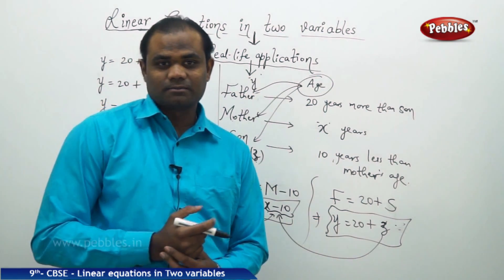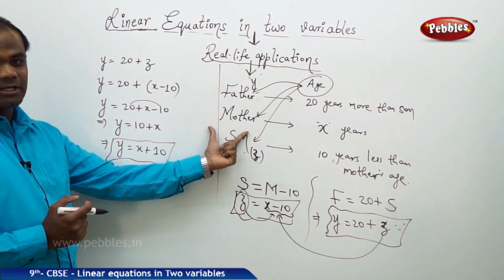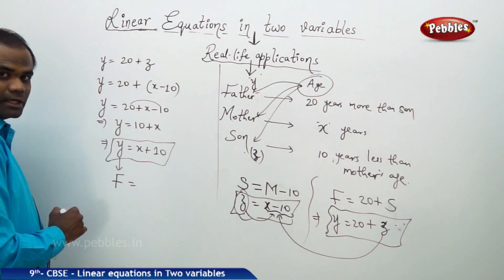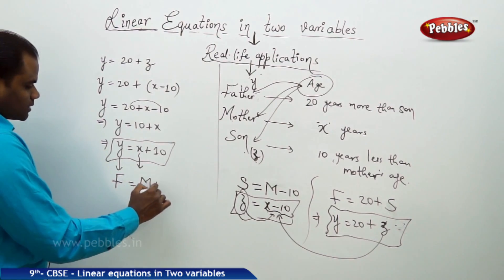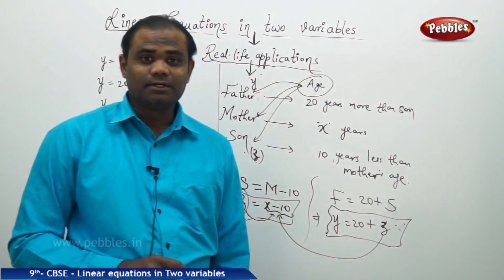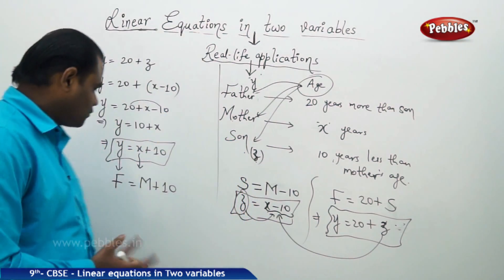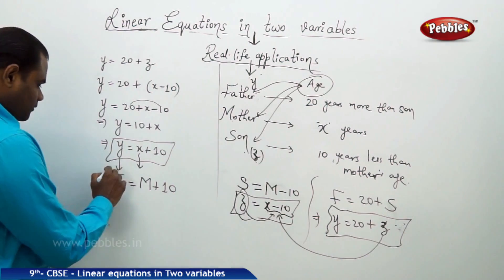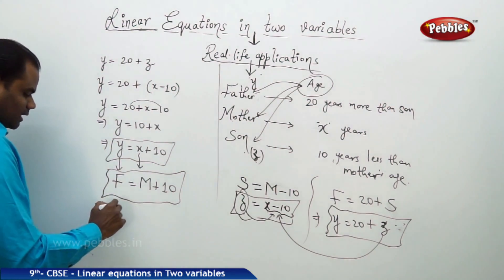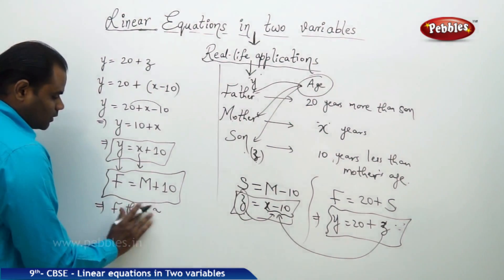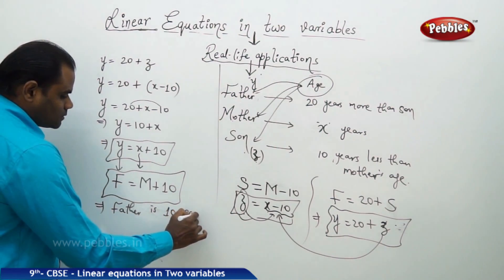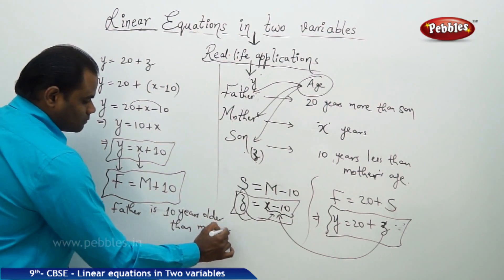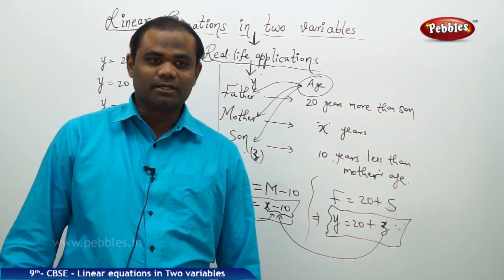So what do we understand from this? We can clearly make a comparison between father's and mother's age: the father's age y equals mother's age x plus 10. This means the father is 10 years older than the mother — a real-life relationship derived through linear equations.